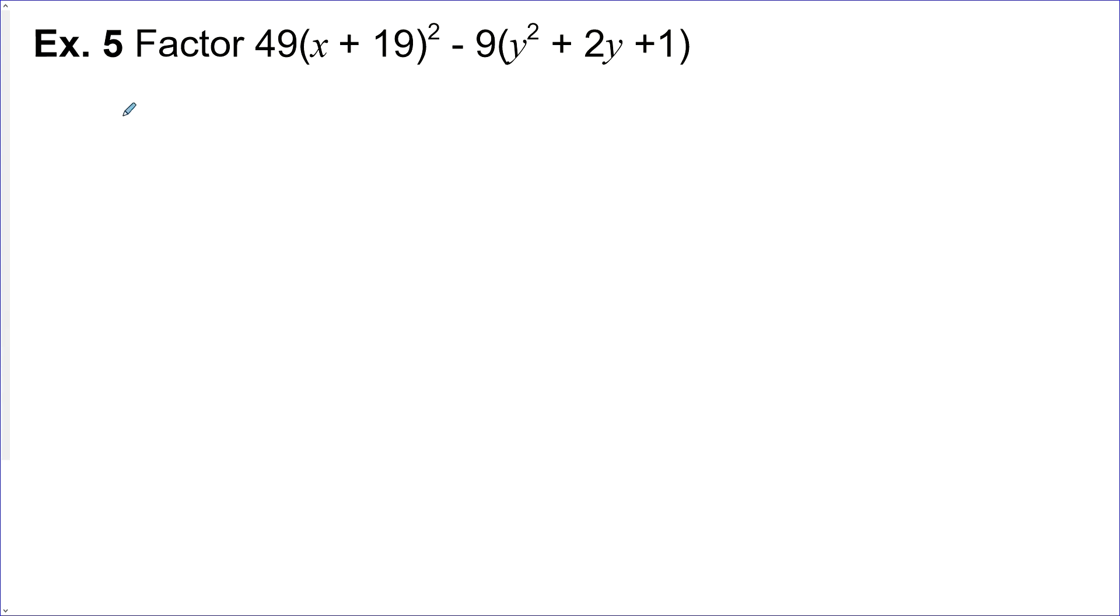Example 5, we want to factor this. Now this is quite difficult if we would try to multiply this out. So don't do that. I'm going to keep using my fancy pen because we want to do this in a fancy, shorter way. So 49 is a perfect square. So red flags or alarm bells should be going off in your head. x plus 19 squared is also a perfect square because, hey, it's squared right there. So then 9 is also a perfect square. The only thing that's not is, well, what do we have here? Oh, it's a perfect square trinomial. So if I quickly factored that, I'd end up with (y plus 1)².